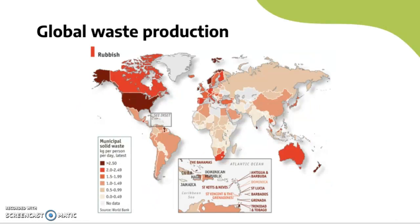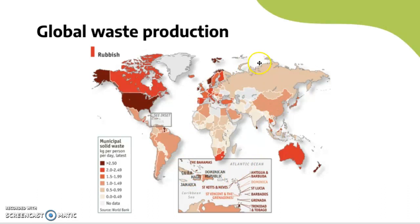Looking at municipal solid waste, the trend coincides with the previous map. The largest kilograms per person per day is around North America, Australia, New Zealand, and most of Europe. Lower solid waste per person is concentrated in Africa and parts of Asia. Russia has relatively low waste per person. China, parts of Northern Africa, the Middle East, parts of Europe, and much of South America fall in the middle range.